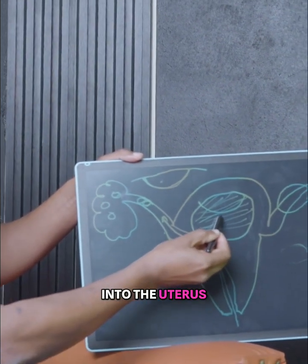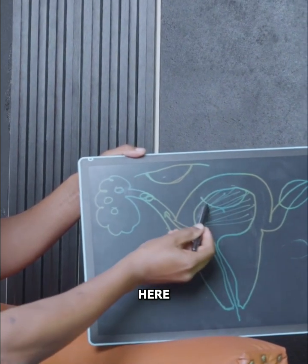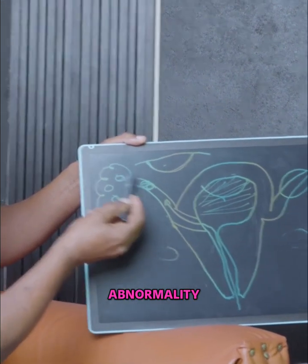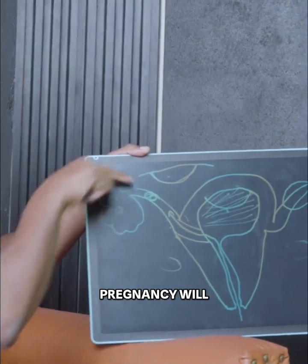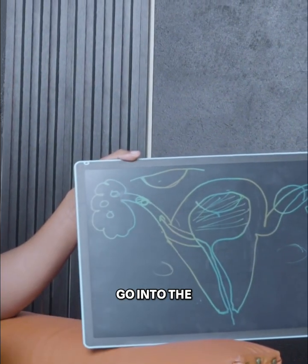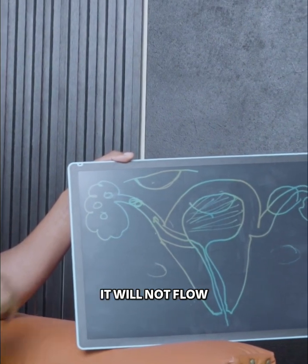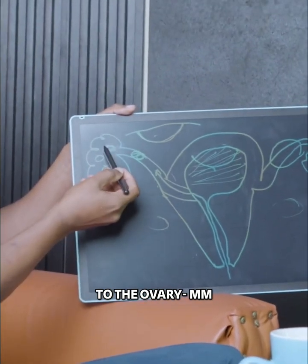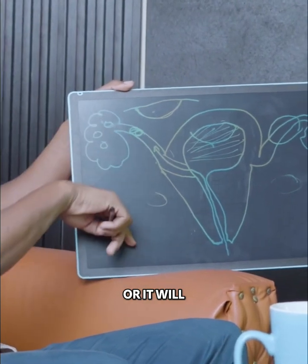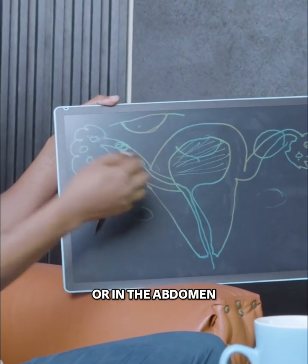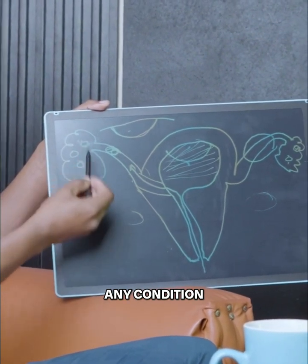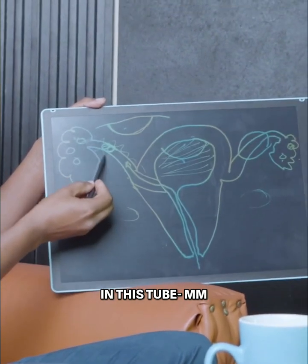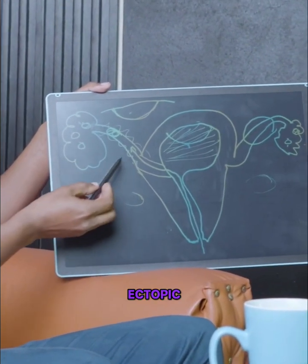The embryo comes into the tube and into the uterus where it will implant here. Once you have fertilization, if there's any abnormality in this tube, then that pregnancy will not go into the uterus. It will not flow, so it will either grow here in the tube, or it will come to the ovary, or it will develop in the pelvis or in the abdomen. Any condition that causes an abnormality in this tube will lead to an ectopic pregnancy.